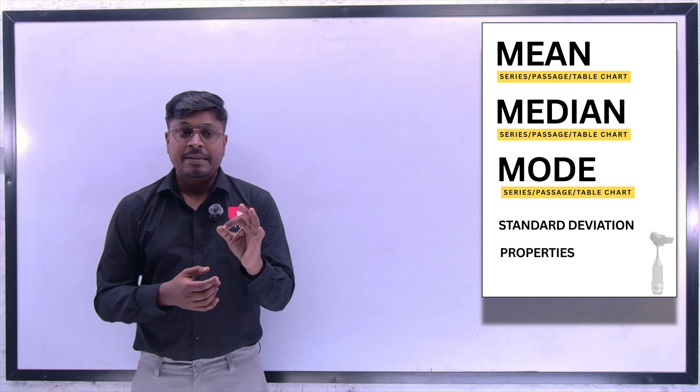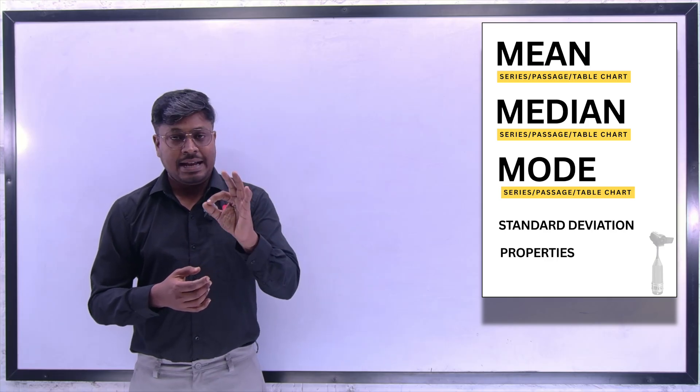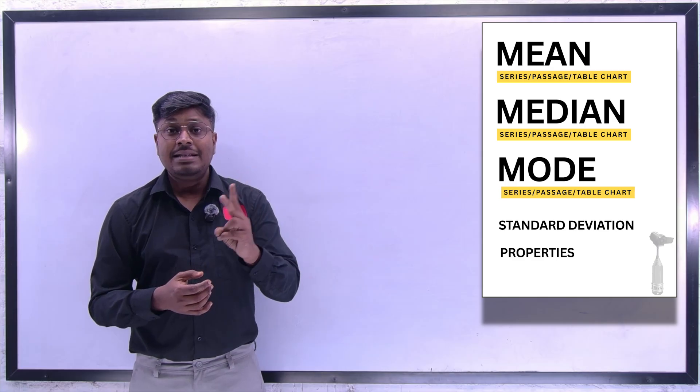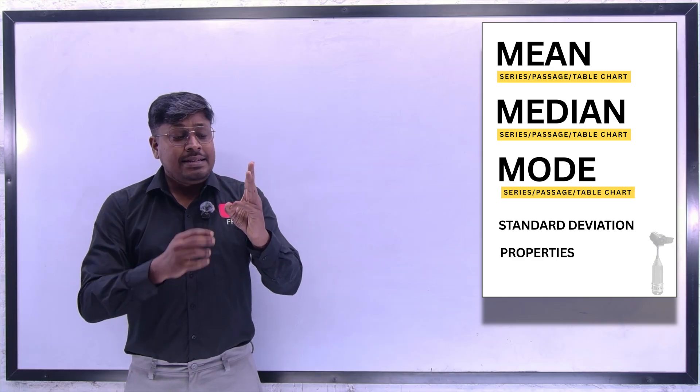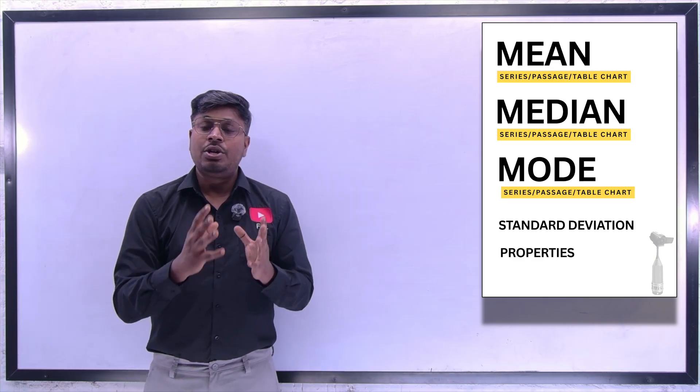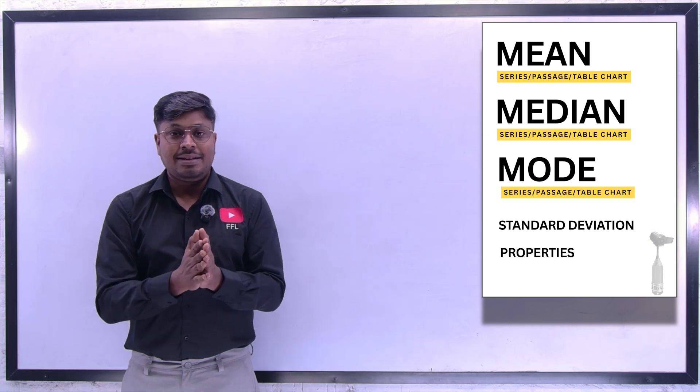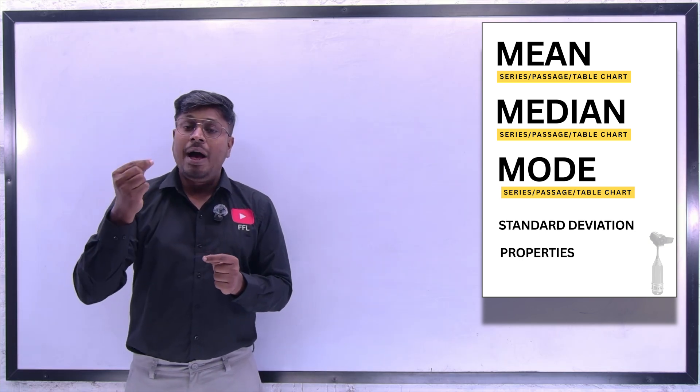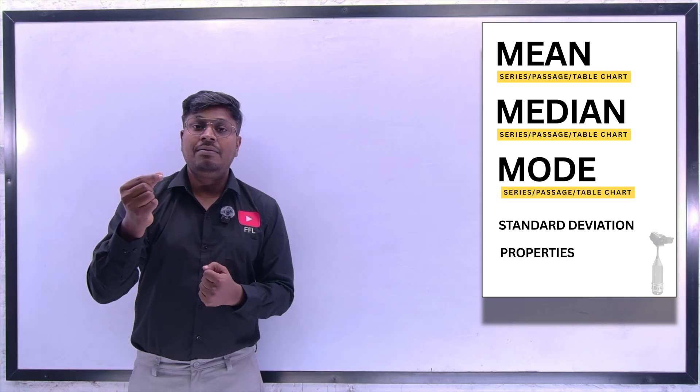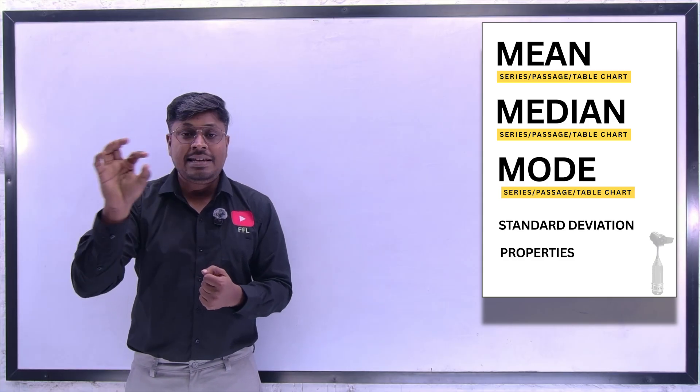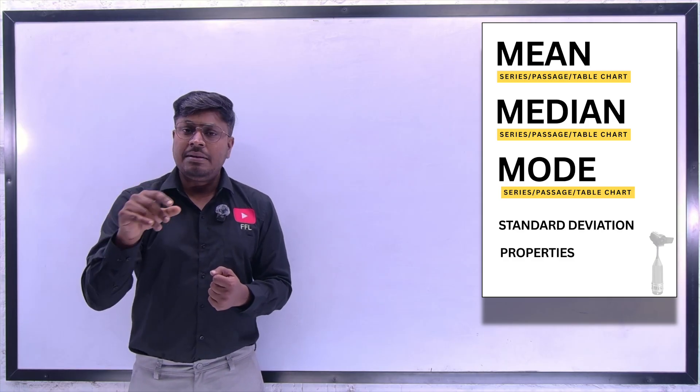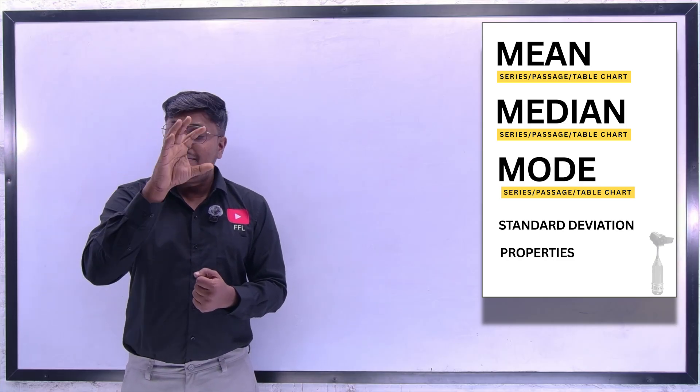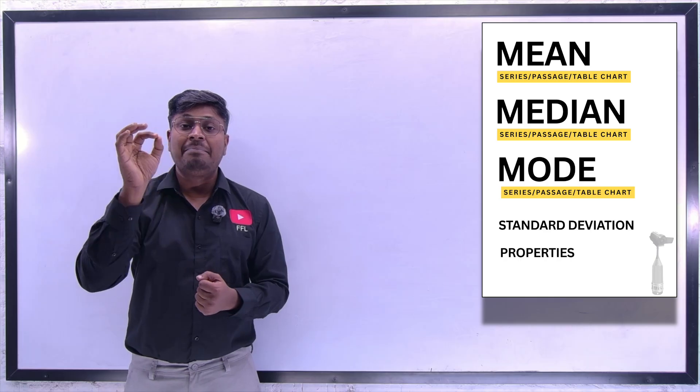So first, statistics has three major categories. One is mean, second is median, and third is mode. These are the three major categories that you have to learn in statistics. For example, if you take the first category mean, for mean you have to know how to solve a question if it is a series. So in the exam they usually give you a series and they will ask you to find the mean or find the median.